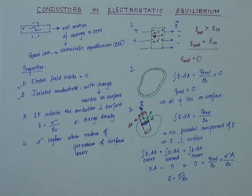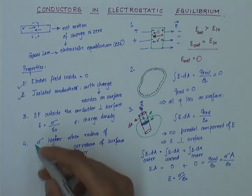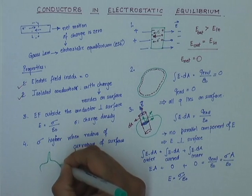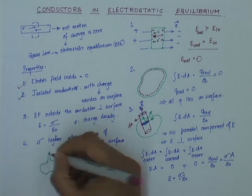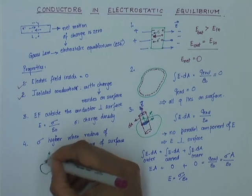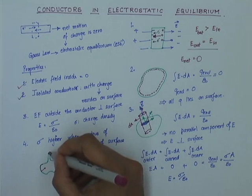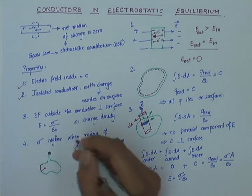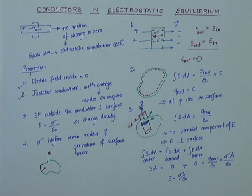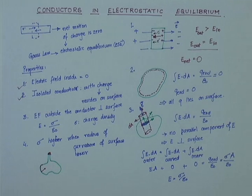Those three were logical proofs. For the fourth property we will not present a logical proof — we accept that it has been experimentally proven. What it means is that if I have an irregularly shaped conductor, the charge density over the surface is inversely proportional to the radius of curvature of the surface. So where the radius of curvature is really small — like a sharp point — the charge density will be much higher compared to a flatter surface with a large radius of curvature. This applies to any conductor in electrostatic equilibrium.